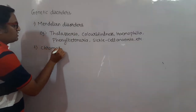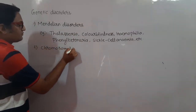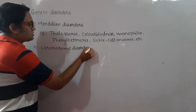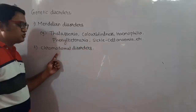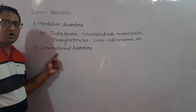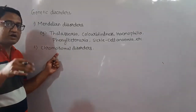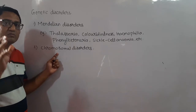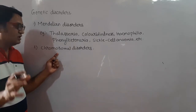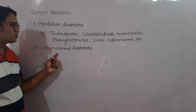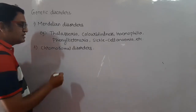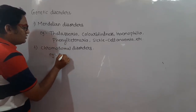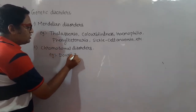Number two: Chromosomal disorders. The disorders which are caused due to addition or deletion of a chromosome, or abnormal arrangement of chromosomes, are called as chromosomal disorders. Examples include Down's syndrome.